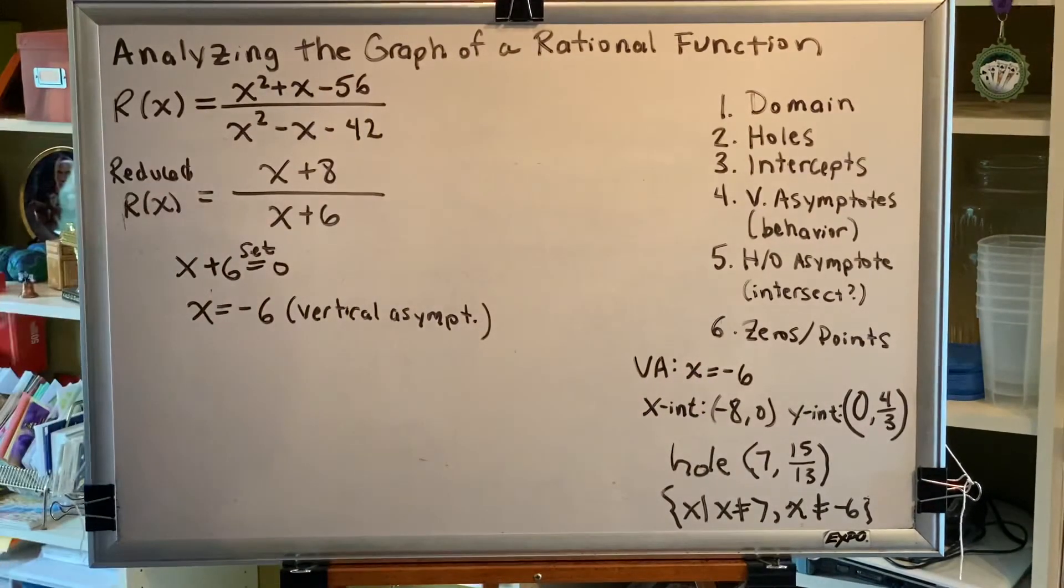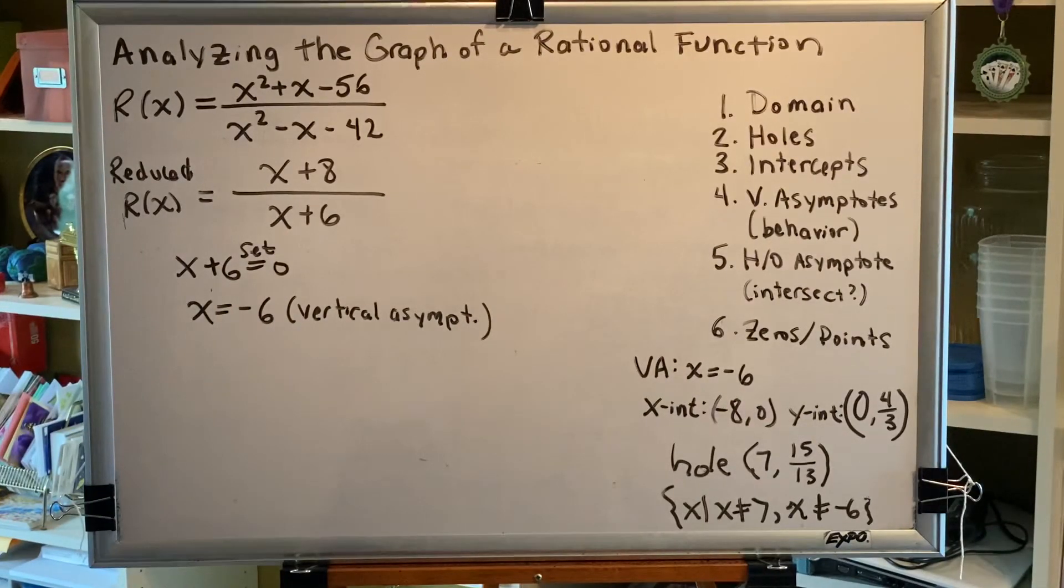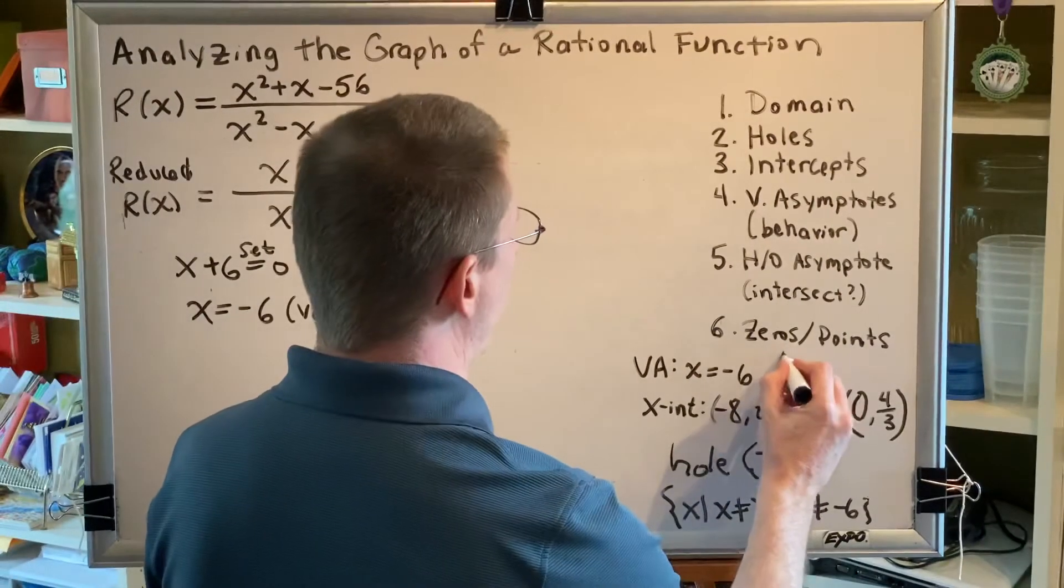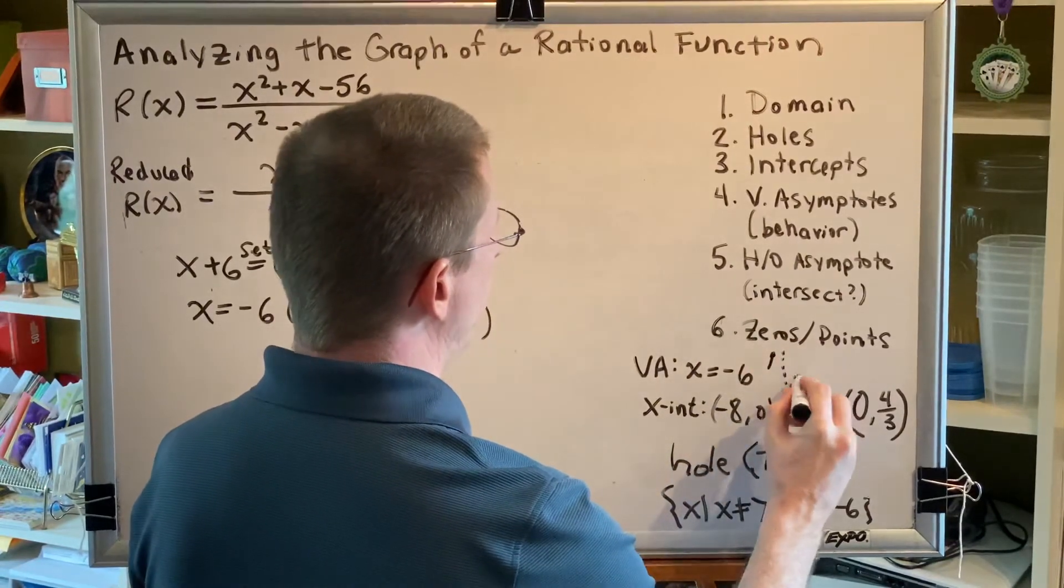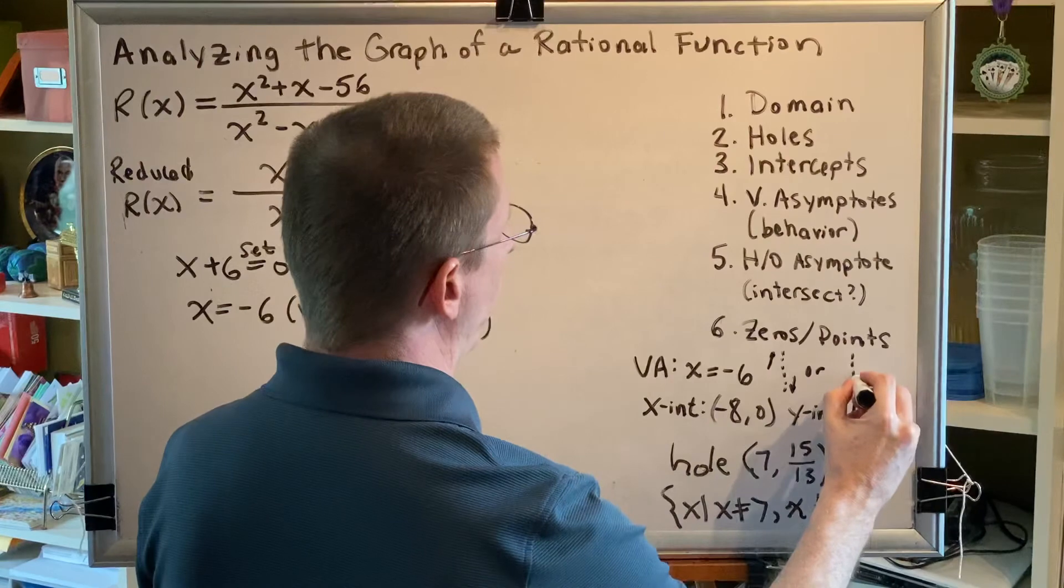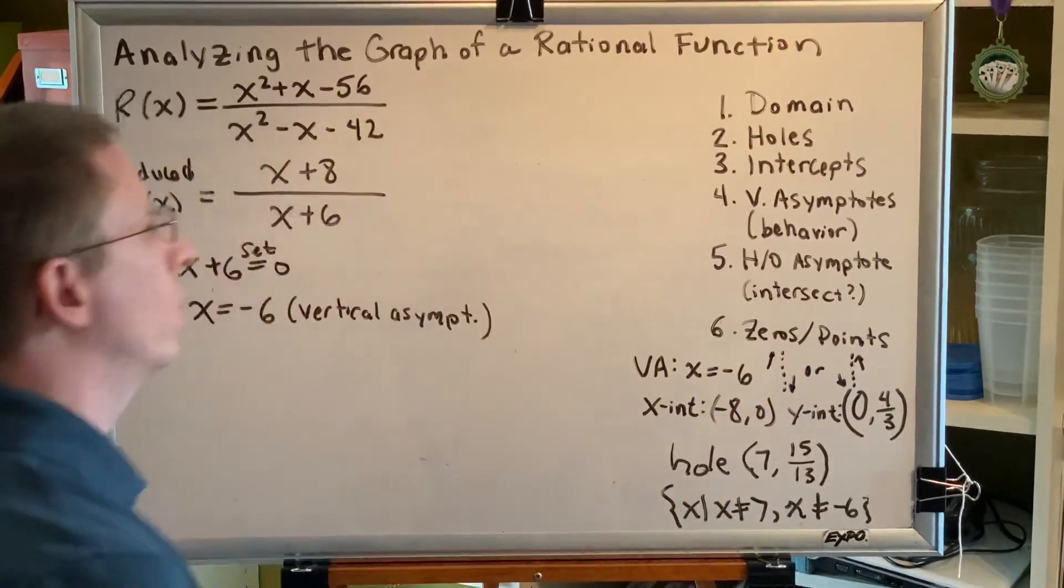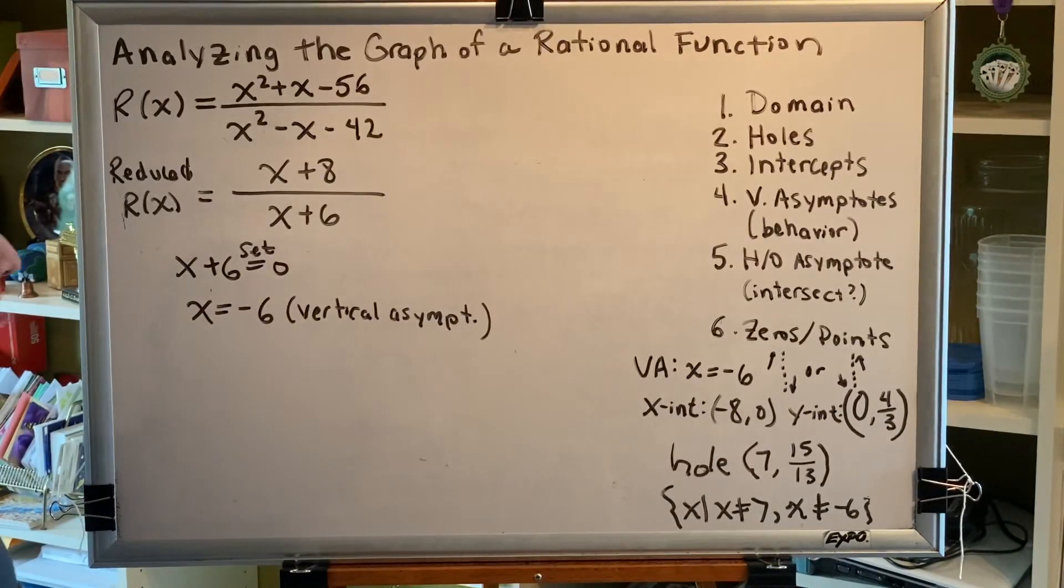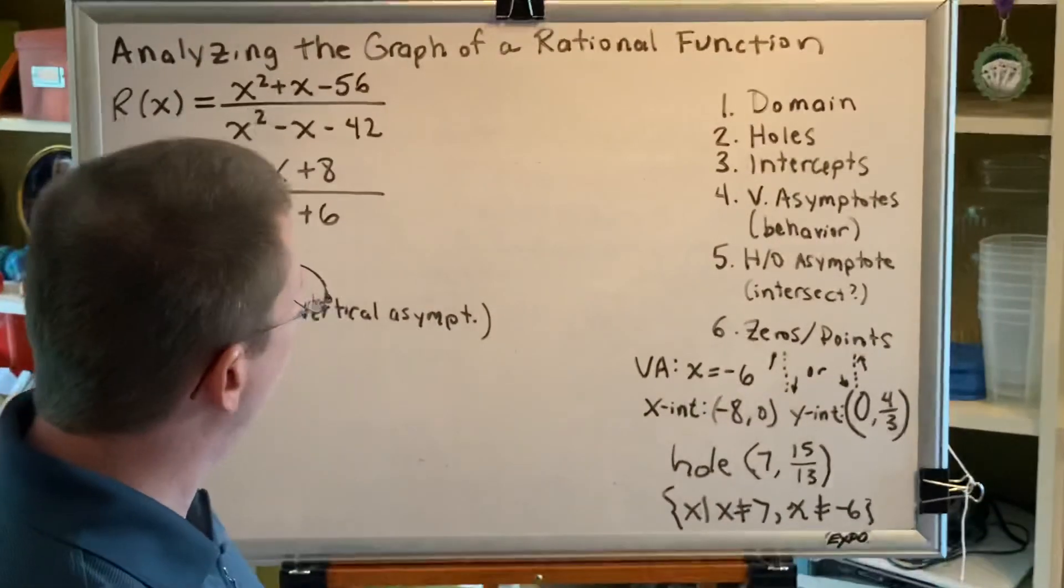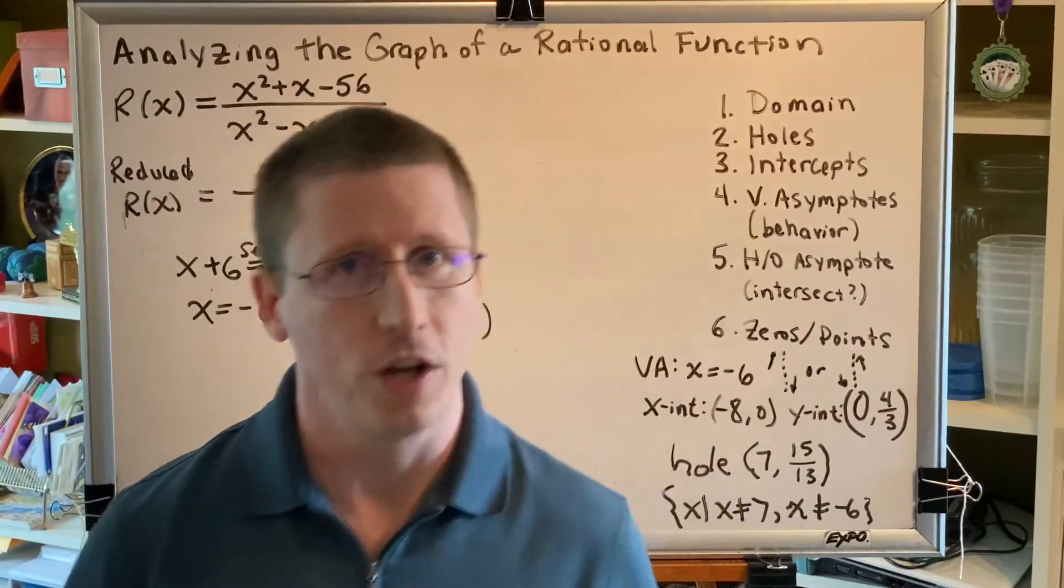Notice that we got this factor x plus 6 just once, which is an odd value. So that means that our vertical asymptote is either going to be up on the left, down on the right, or down on the left and up on the right. We'll get more information about that later. We've now completed steps 3 and 4. The only ones left to go are 5 and 6. We'll continue that in the next video.